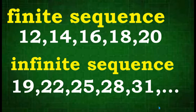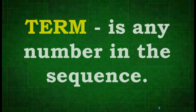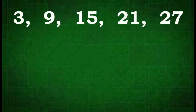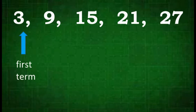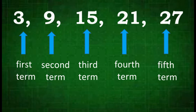Now let's proceed to lesson 2, finding the terms of a sequence. Let us define first the word term. A term is any number in the sequence. For example, given the sequence 3, 9, 15, 21, 27: 3 is a term, 9 is a term, 15 is a term, 21 and 27 are also terms. Now 3 is the first term, 9 is the second term, 15 the third, 21 the fourth term, 27 the fifth term.